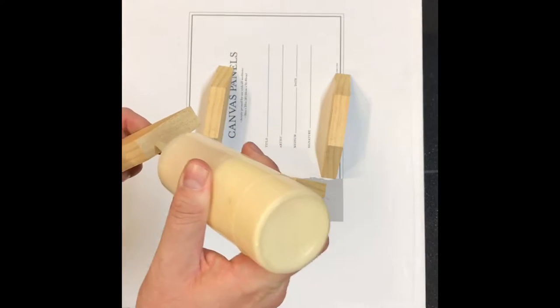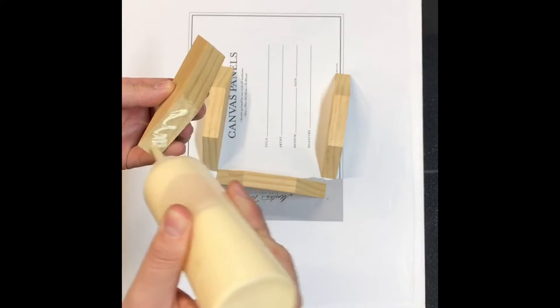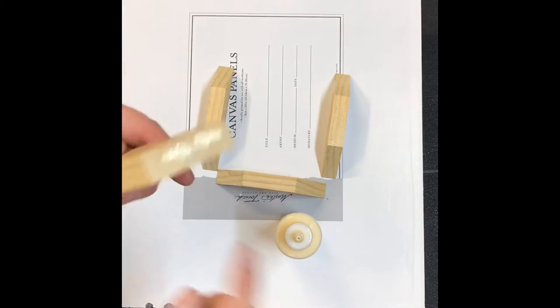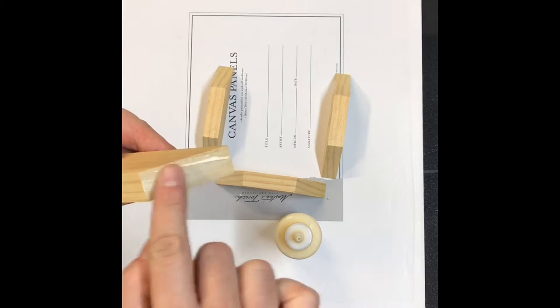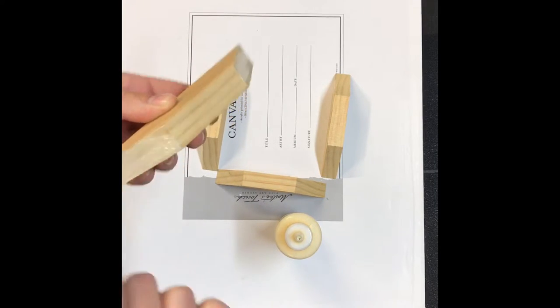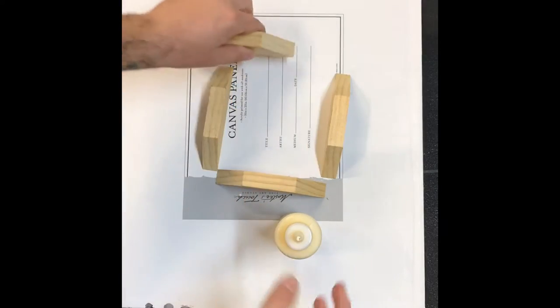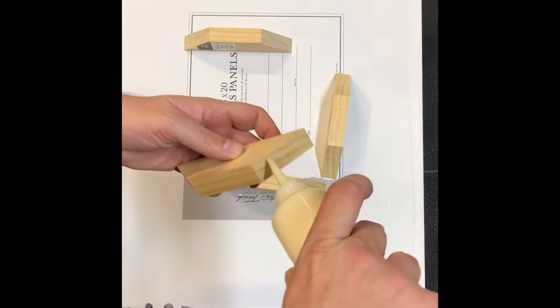So I'm going to glue up the edges here. Put some glue on each one. I'm actually just going to use my finger to spread it. Usually I will use a glue brush, but this is a quick one, so I could just use my finger here. Make sure the glue is spread out nice on all the pieces.